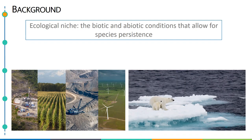Now, anthropogenic impacts of the last century have had dramatic impacts on climate and the landscape that are reflected in changing patterns of biodiversity and declines in many species as they're unable to adapt or shift their ecological niche in response to these changes.